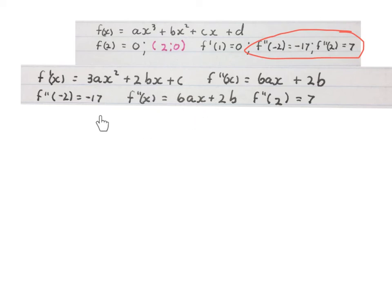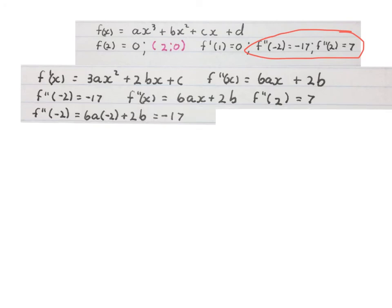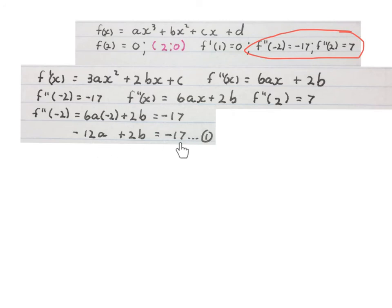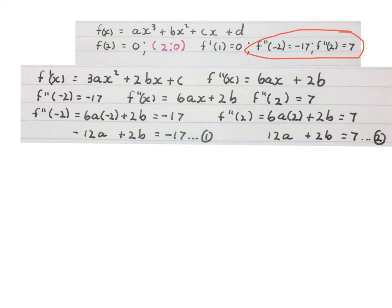They gave us two pieces of information about the second derivative. Taking the second derivative and substituting x = -2, equating it to minus 17, gives the first equation with two variables. Then substituting x = 2 into the second derivative and equating it to 7 gives a second equation with the same two variables, and we can now solve simultaneously.